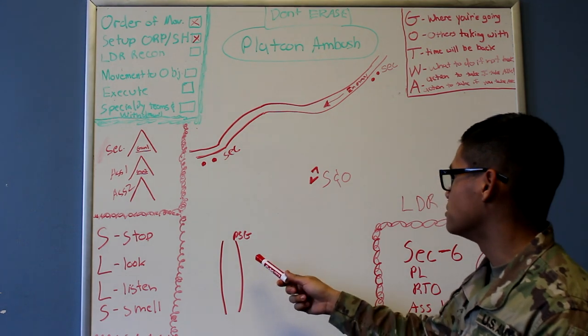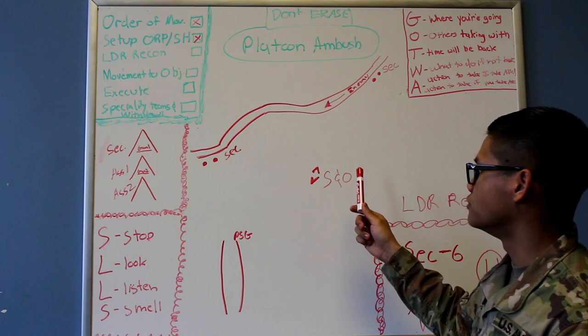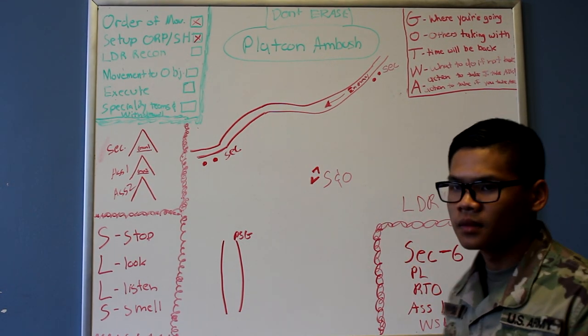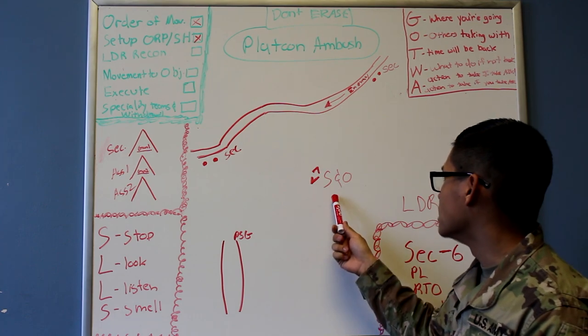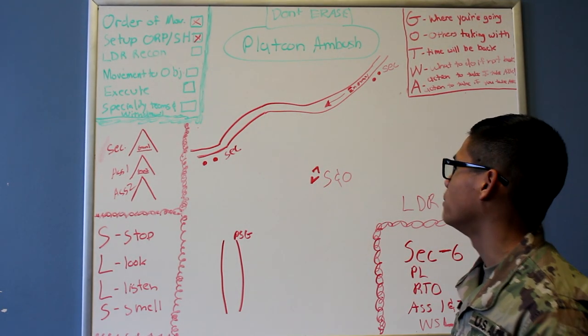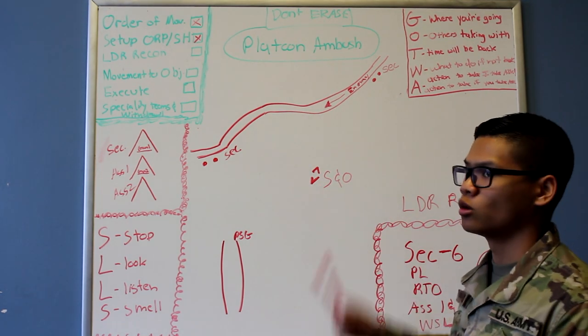Once that's all done and the PSG counts him out, the PL and the leaders recon will head up to the objective to survey it. 50 meters before reaching the objective, the PL will drop a surveillance and observation team, one facing towards the direction of the ORP, one facing towards the objective, for a total of two people.